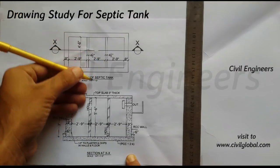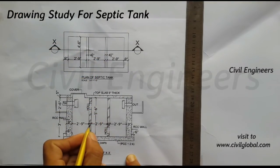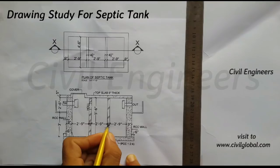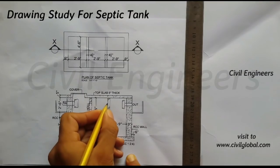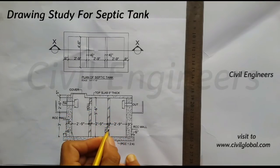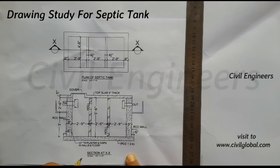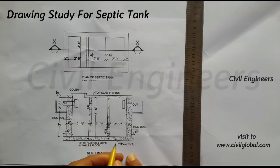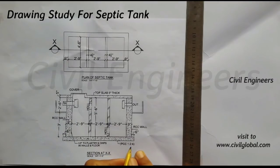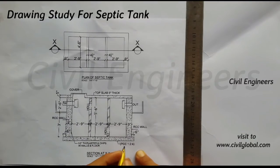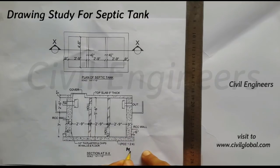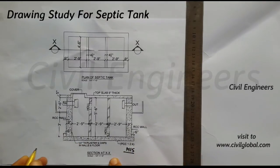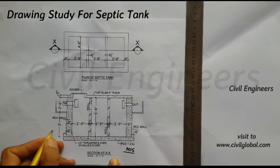These are the internal walls with thickness 4.5 inches, and this one is also 4.5 inches. This construction is from brick masonry. This is the PCC 1:4 ratio — we can say this is M15 grade of concrete, M15 PCC.